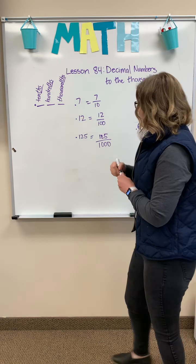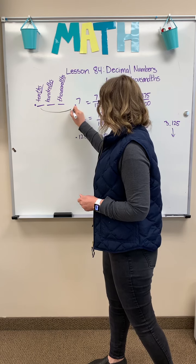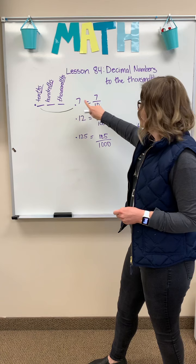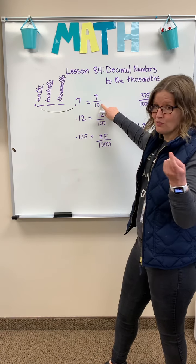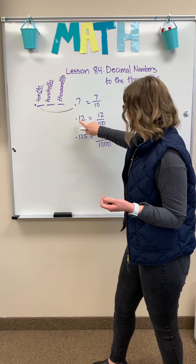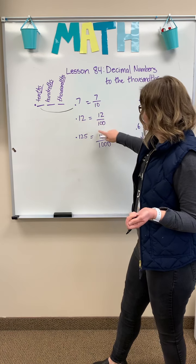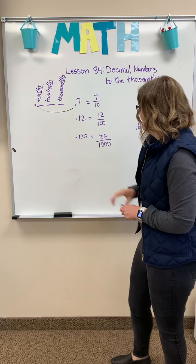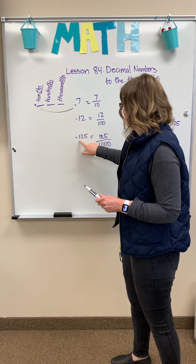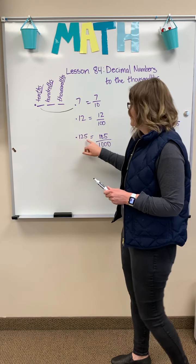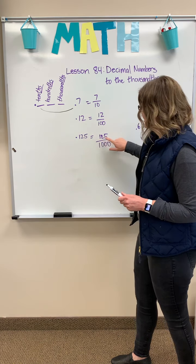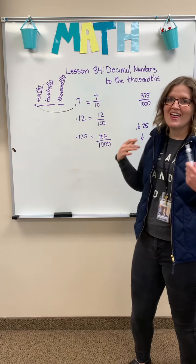Here's an example: when we see a tenth, we see a point and then seven — we say it's seven tenths. In fraction form, that's what it would look like. Here's twelve hundredths and its fraction form. Now look — we've got one, two, three digits to the right of our decimal, so we know that this is a thousandth. We say one hundred and twenty-five thousandths.